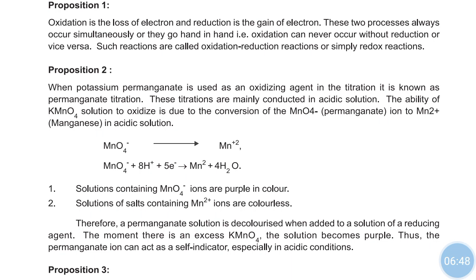MnO4 minus ion, that is the permanganate ion, is converted to Mn2+, that is the manganese ion, in acidic solution. The half-reaction is: MnO4 minus + 8H+ + 5 electrons → Mn2+ + 4H2O. The MnO4 minus ions in KMnO4 are purple in color.